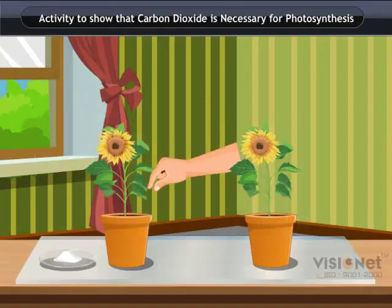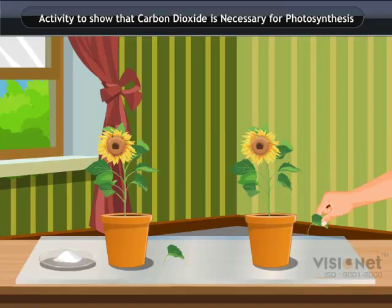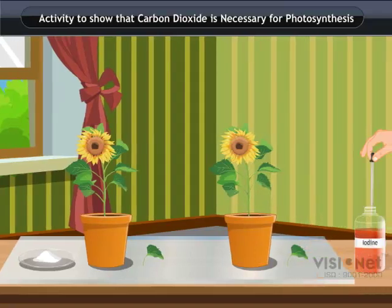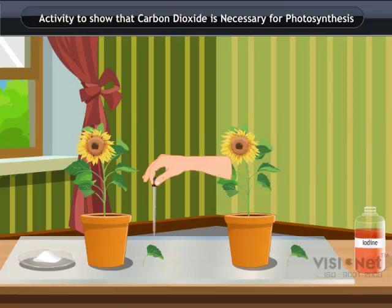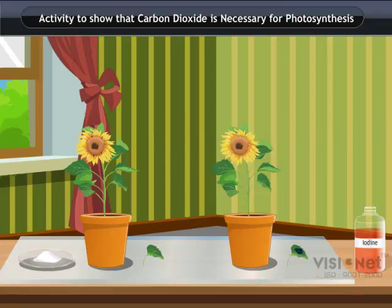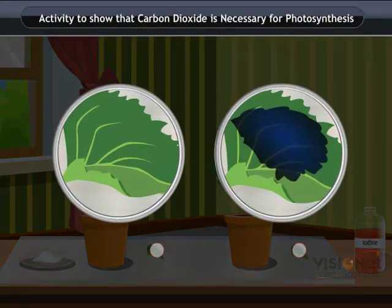Pluck a leaf from each plant and check for the presence of starch as in the above activity. Do both the leaves show the presence of the same amount of starch? We conclude that carbon dioxide is essential for the photosynthesis process.